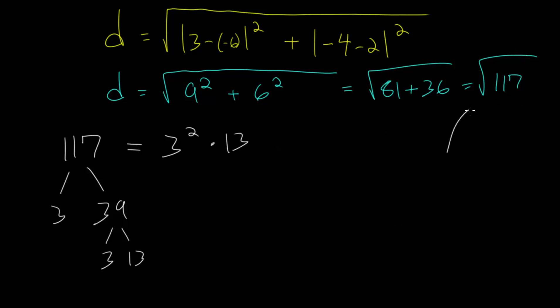So we have a perfect square, meaning we can actually simplify this. So the square root of 117 can be rewritten as the square root of 3 squared multiplied by 13. And we can separate this into two square roots multiplied together, since we have a product under the square root. And the square root of 3 squared, or the square root of 9, is simply 3. So we can rewrite the square root of 117 as 3 multiplied by the square root of 13.